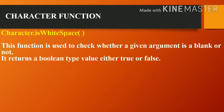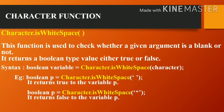The next function is Character.isWhitespace(). This function is used to check whether a given argument is a blank or not. For example: Boolean p = Character.isWhitespace(' '). A space is a white space, so it returns true to variable p. If an asterisk '*' is in the argument, it is not a blank, so it returns false to variable p.